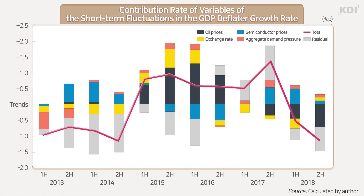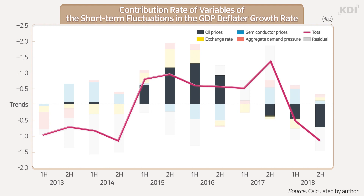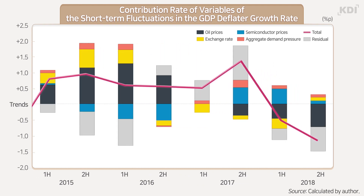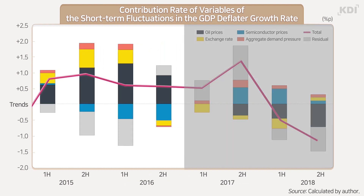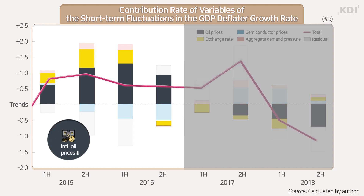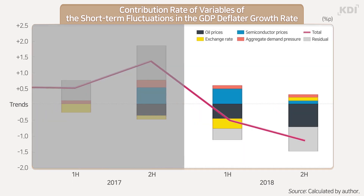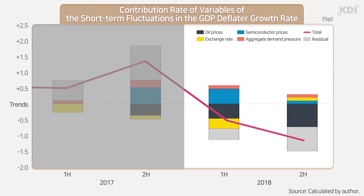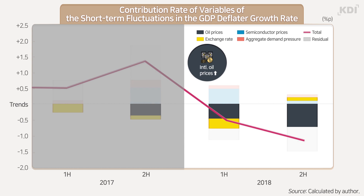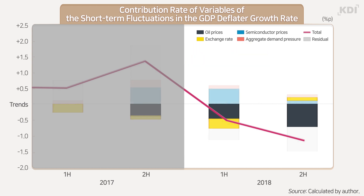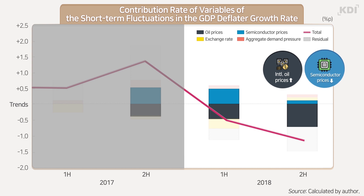Since 2015, international oil prices have become the main source of volatility. In 2015 and 2016, the GDP deflator rose on the back of falling oil prices and a rising exchange rate. In 2018, the GDP deflator reversed to a decline due to rising oil prices and a falling exchange rate in the first half, and rising oil prices and falling semiconductor prices in the second half.